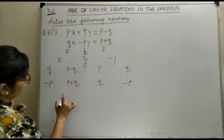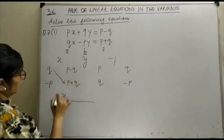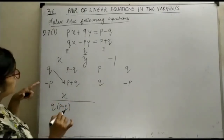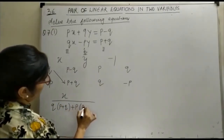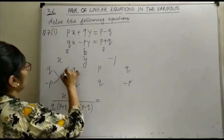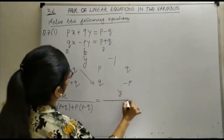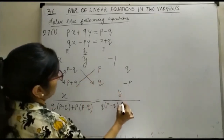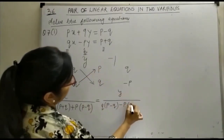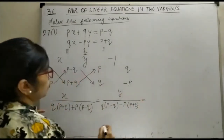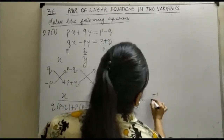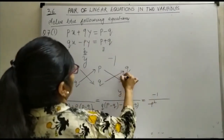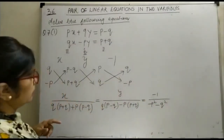Now we will work out for the values of x and y. x is equal to — just cross multiply — that is Q times (P plus Q). We take the minus of the formula, so it will become plus P times (P minus Q). For y, your terms are P minus Q, Q minus P, and P plus Q. This gives minus 1 upon minus P squared minus Q squared.